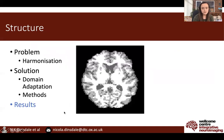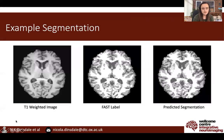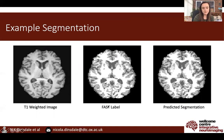Here you can see an example segmentation showing that the segmentation is doing what we would hope. We have an example T1-weighted input image from the OASIS dataset, the generated label from FAST, and our predicted segmentation. It can be seen that there is a high degree of fidelity between the images.